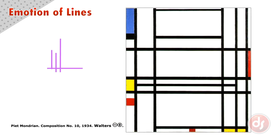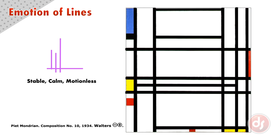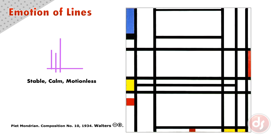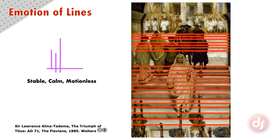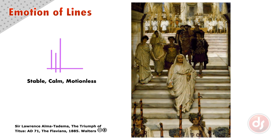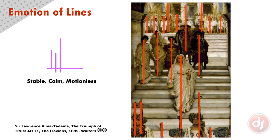Horizontal and vertical lines also feel stable, calm, or motionless. Piet Mondrian uses strong horizontal and vertical lines to create balanced and calm images. The Triumph of Titus uses actual horizontal lines from the stairs, but also creates implied vertical lines from the upright posture of the figures. This combined with the staffs and pillars creates a very stable composition.